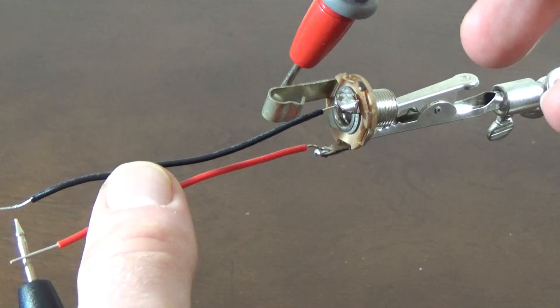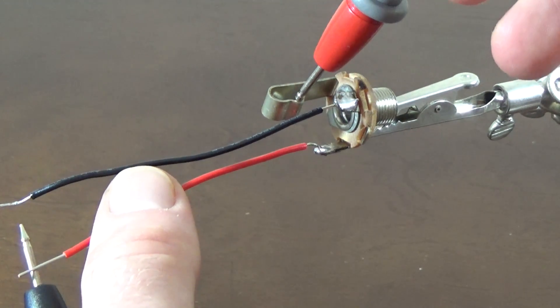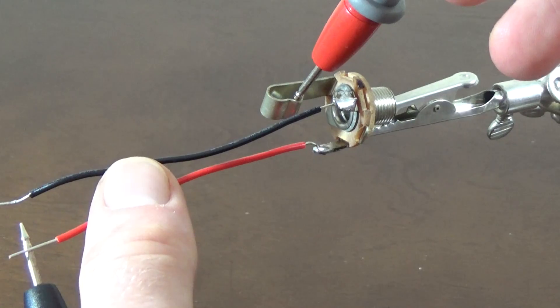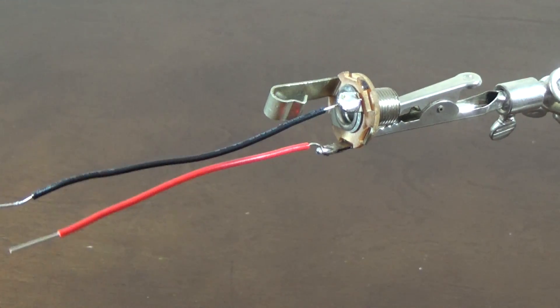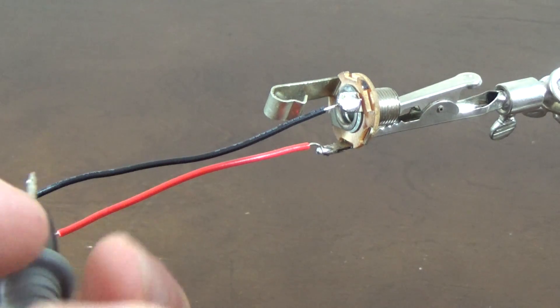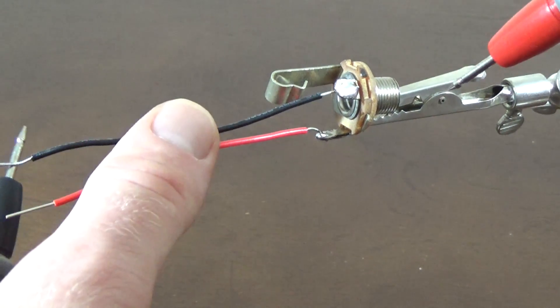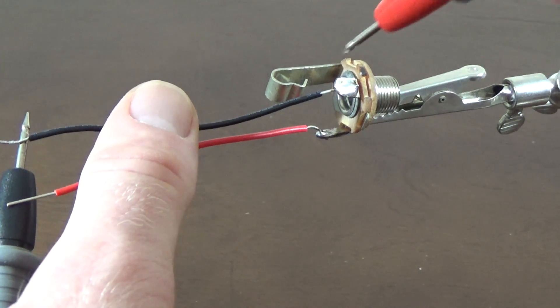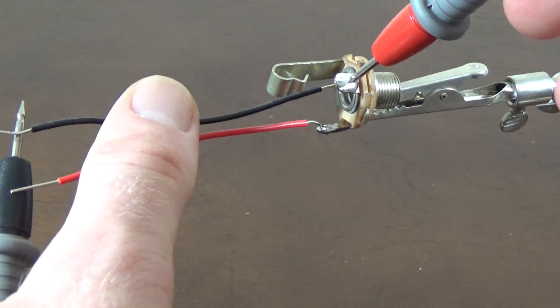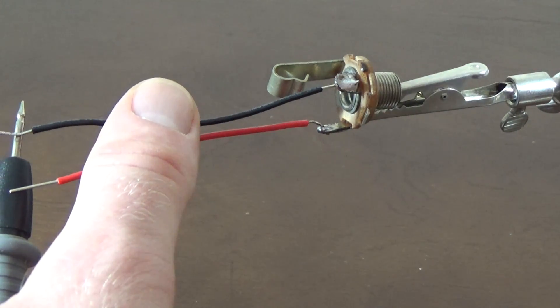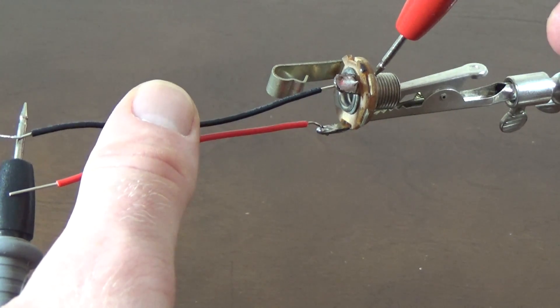When you're finished soldering, go ahead and check your work by probing the wire and the connector as well as various places on the guitar jack just to make sure you have a solid connection and we didn't short anything, meaning there's connections between the signal and ground. This is not desired. You need two independent connections in order to get your signal from the guitar to the amplifier.